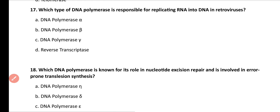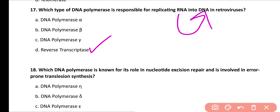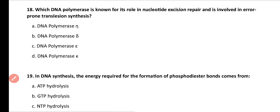Question number 17. Which type of DNA polymerase is responsible for replicating RNA into DNA in retroviruses? DNA polymerase alpha, DNA polymerase beta, DNA polymerase gamma, or reverse transcriptase? Correct answer is option D. Reverse transcriptase enzyme is responsible for replicating RNA into DNA.